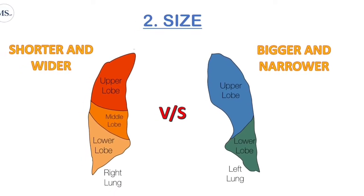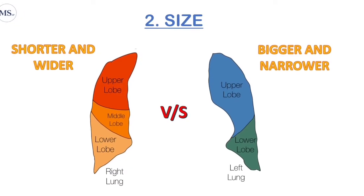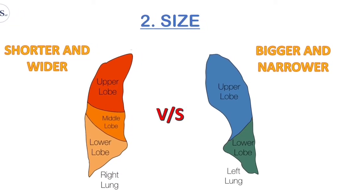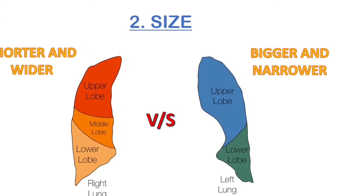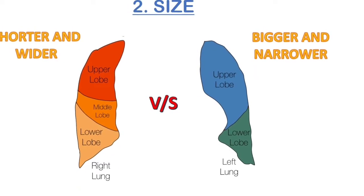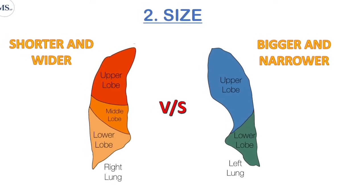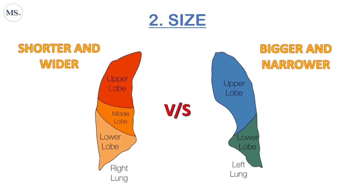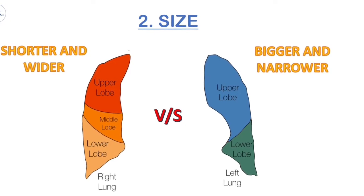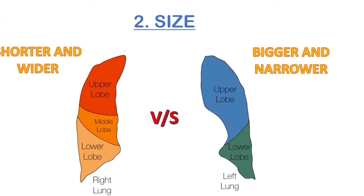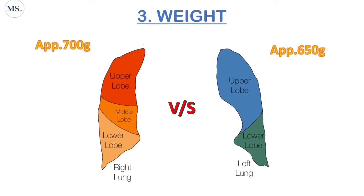Although the left lung is not broad, it is longer than the right one. This is because our liver sits right underneath the right side of our diaphragm, so the right lung cannot be as long to avoid interfering with the liver. On the other hand, the left lung does not have the liver underneath the diaphragm, so it extends slightly lower and deeper. In summary, the right lung is larger and broader, while the left lung is longer.